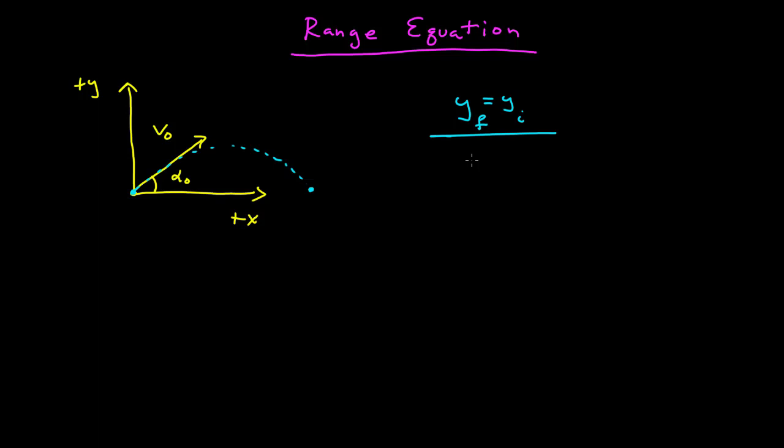So we're going to go straight to the projectile motion equation that we had before. If our final y position equals our initial y position, given our assumptions, this is equal to zero.